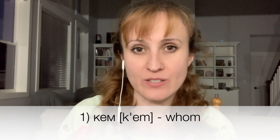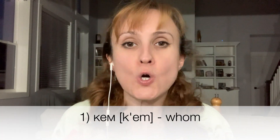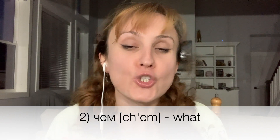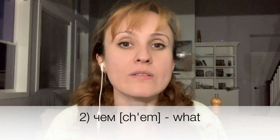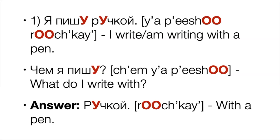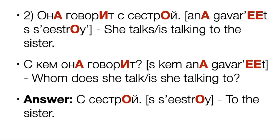This case has two questions: кем and чем. Кем is the instrumental form of кто — who? Чем is the instrumental form of что — what? Number one: Я пишу ручкой — I write with a pen. Чем я пишу? — What do I write with? Answer: ручкой — with a pen. Number two: Она говорит с сестрой — She talks to the sister. С кем она говорит? — Whom does she talk to? Answer: сестрой — to the sister.